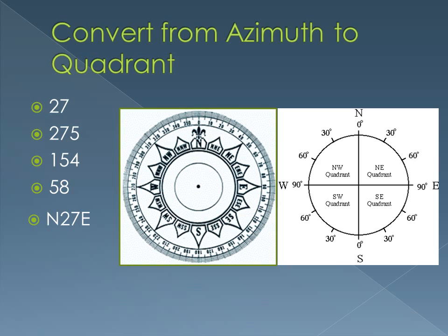The next one is 275. So let's find 275 — it's about right here. Now 270 is directly west, so in the northwest quadrant there should be 90 degrees, and we're just five degrees into it. We always start at either north or south, and since we're in the northwest, we start at north and go 85 degrees west. So north 85 west.